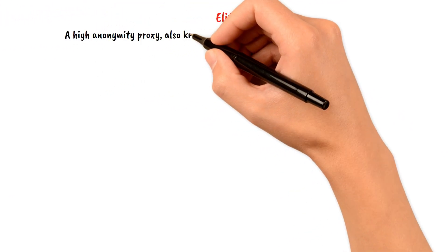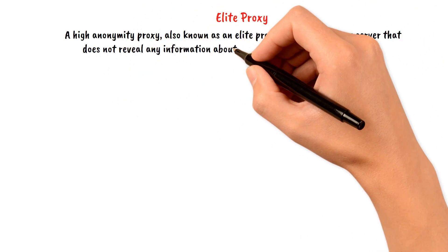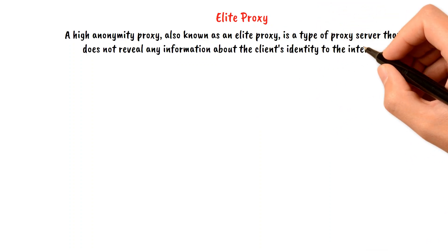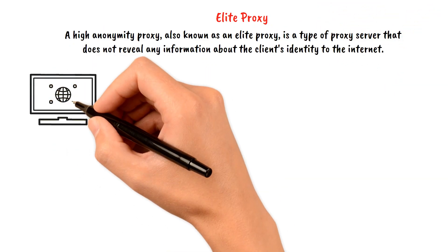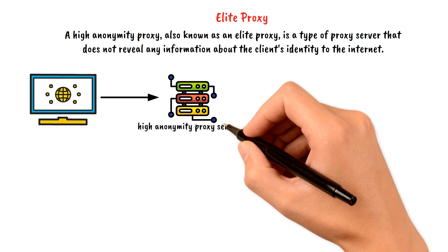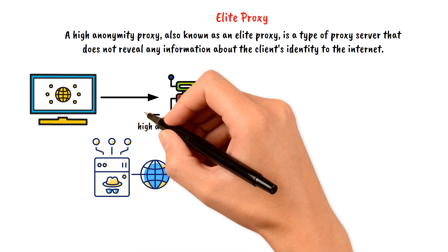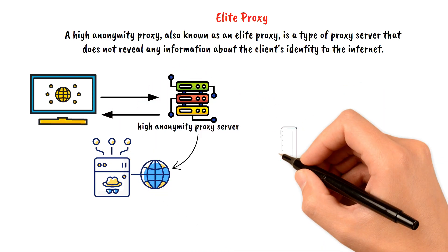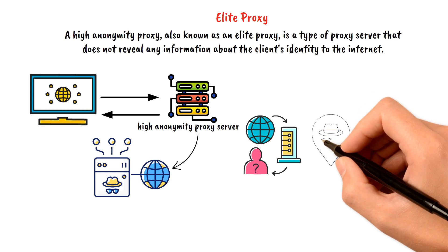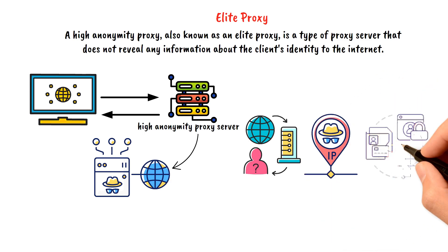A high anonymity proxy, also known as an elite proxy, is a type of proxy server that does not reveal any information about the client's identity to the internet. When a client device sends a request to access a resource on the internet, the request is first sent to the high anonymity proxy server. The proxy retrieves the requested resource and forwards it back to the client without revealing any information about the client's IP address or other identifying information.